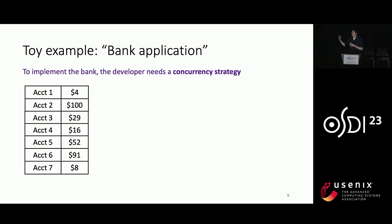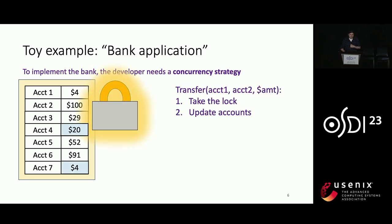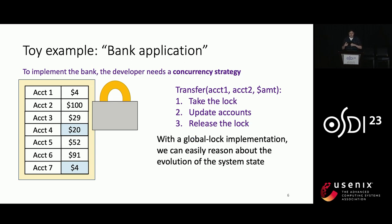When we go to actually implement the bank and update state in place, the developer needs some kind of concurrency strategy. One possible strategy is to use a lock. If you do it this way, we can implement the transfer operation pretty straightforwardly: first, take the lock, update the balances, and then release the lock. And if you do it this way, it's easy to reason about the global state of the system, because when you take the lock, you can be sure no one else is going to interfere with your state.